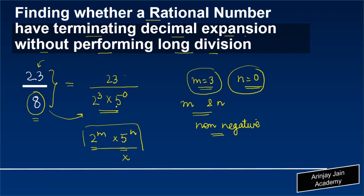So effectively, the denominator can be written as 2 to the power 3 into 5 to the power 0, which means that 23 upon 8 will have a terminating decimal expansion. Let's verify that.